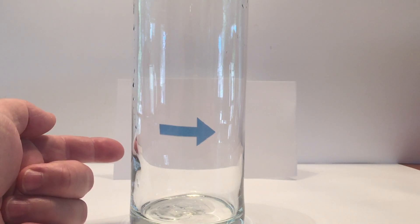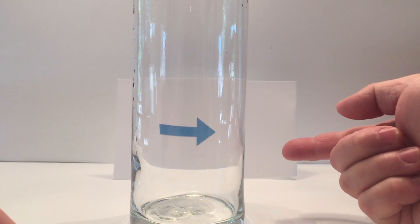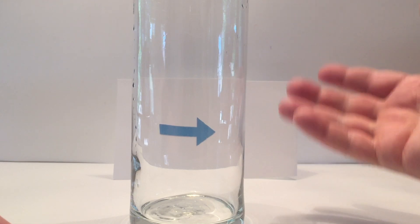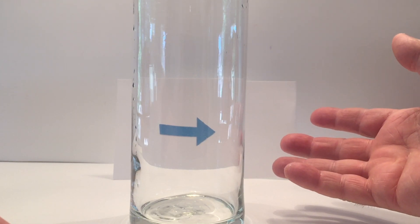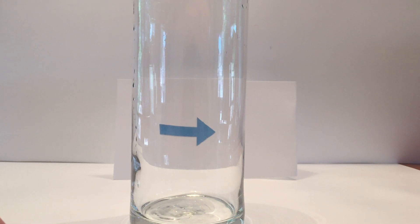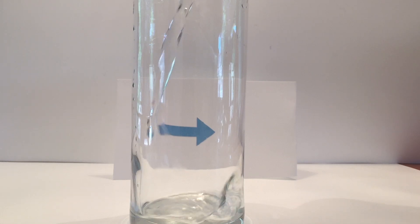So we have the arrow on a piece of paper about four or five inches behind the glass. And we're going to pour water into the glass. As we can see, the arrow's pointing to the right. And we're going to see what happens when we pour the water into the glass and the refraction of light.